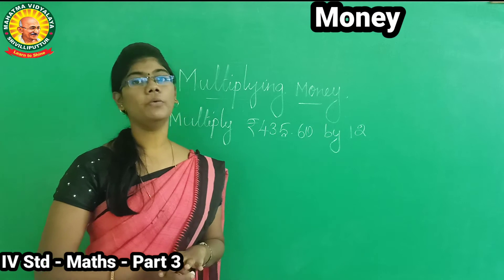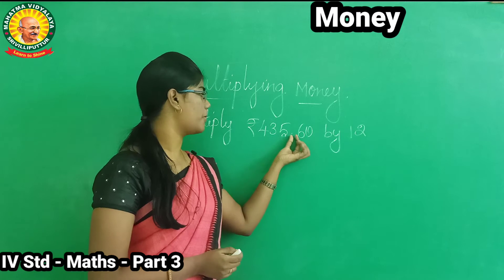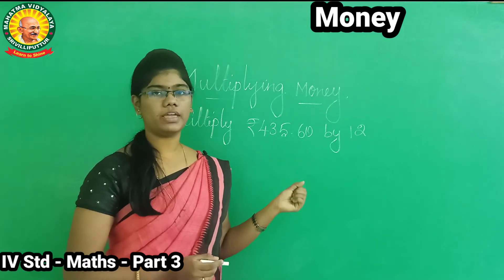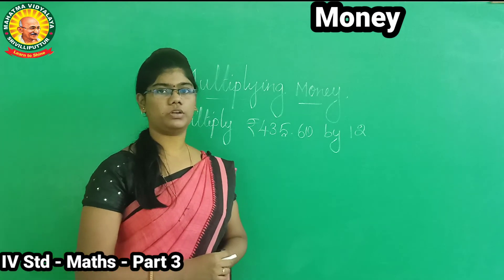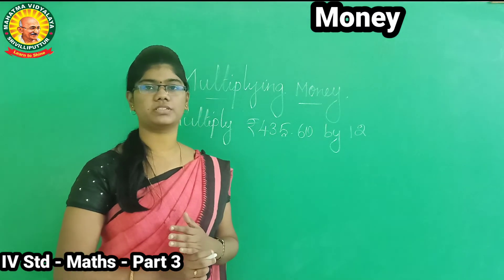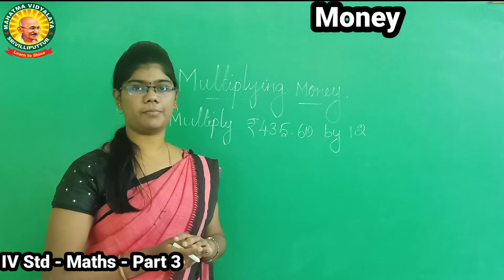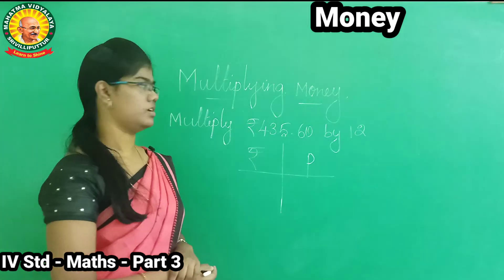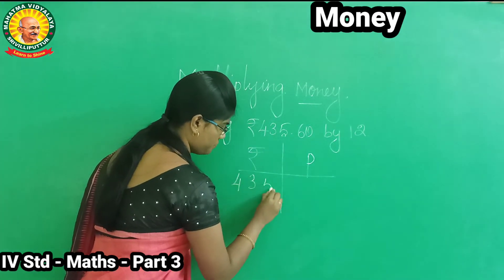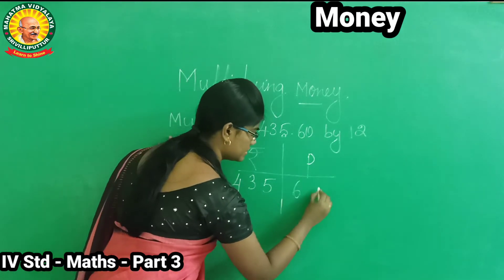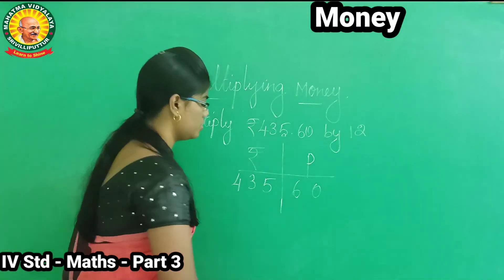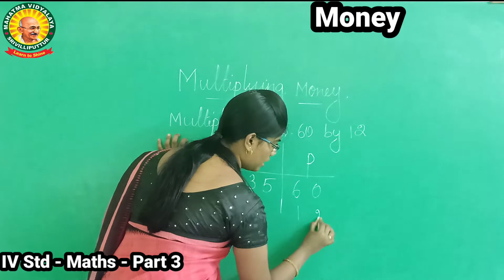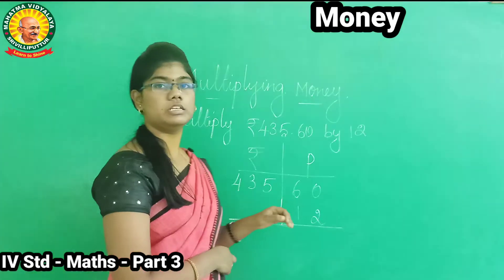Now, for multiplying, we use the method. First, we separate rupees and paise — rupees thaniya, paisa thaniya — split them and write them. So rupees: 435, and paise: 60. Now, what do we need to multiply by? 12. Writing in the paise column — the paise column is the same — okay, multiply.